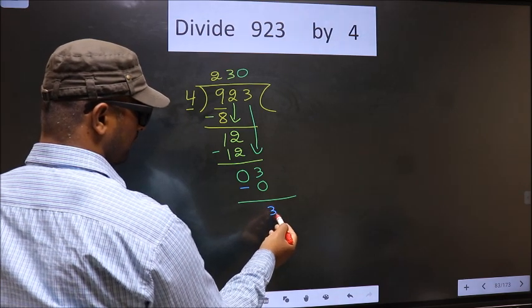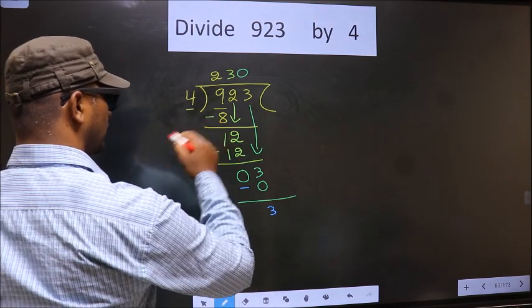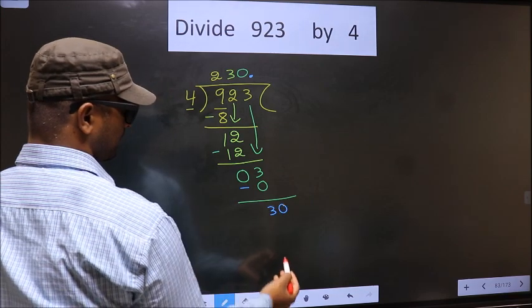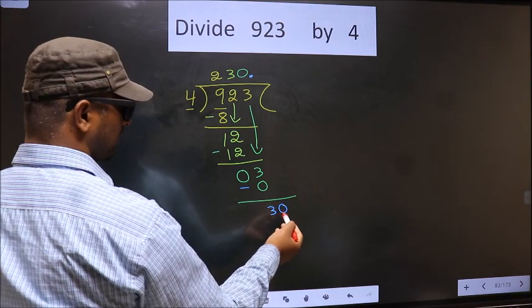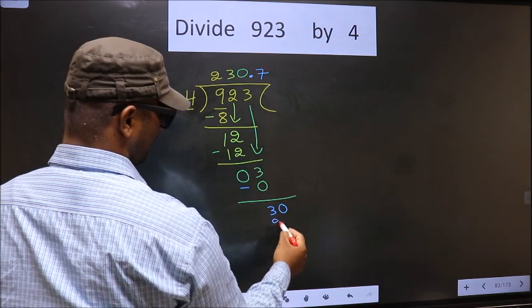Over here, we did not bring any number down. Now 3 is smaller than 4. So now you can put a dot and take 0 here. So 30, a number close to 30 in 4 table is 4 7's, 28.